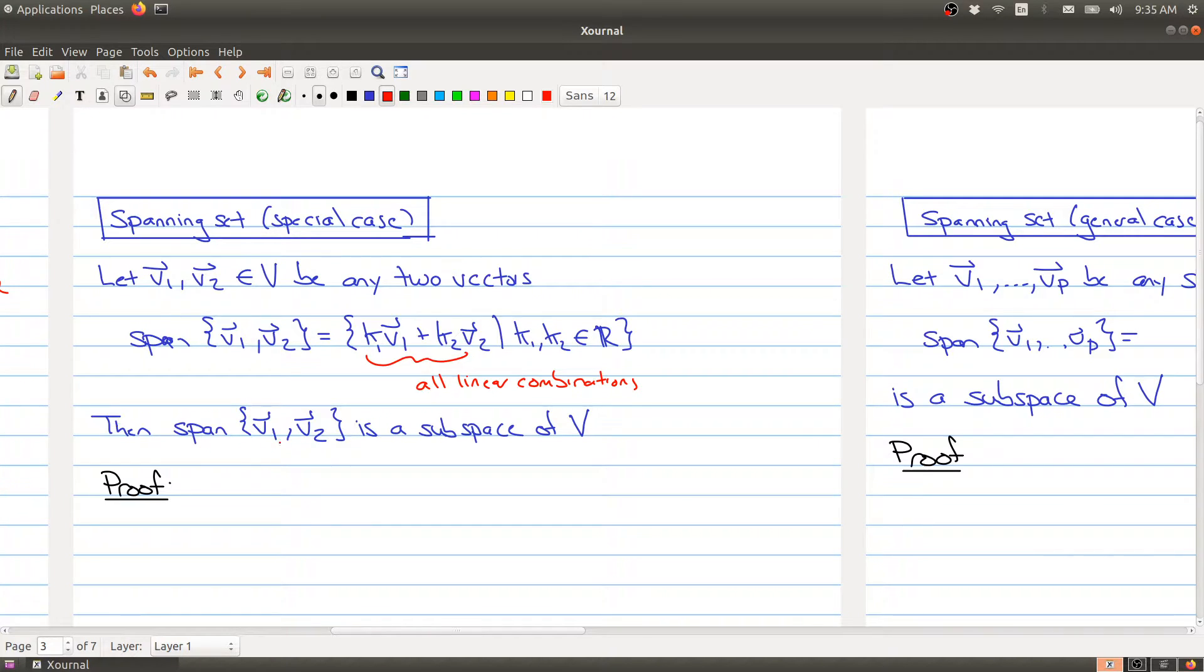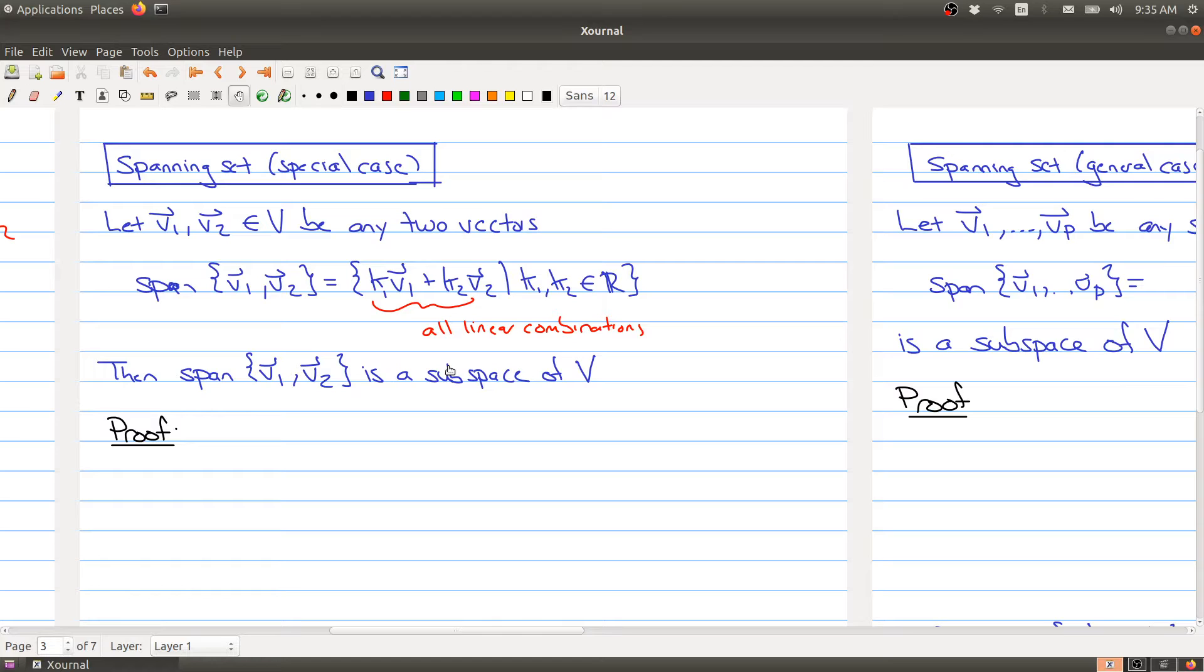What we're going to prove is that when you do this, if you start with a collection of vectors and you take the span, what you end up with is always going to be a subspace of V. This is nice because this gives us a way to quickly build subspaces. Just take a set of vectors and do all the linear combinations, the end result is a subspace. Let's prove it.